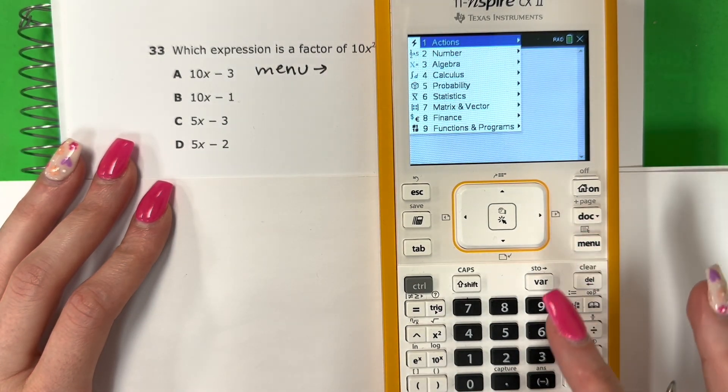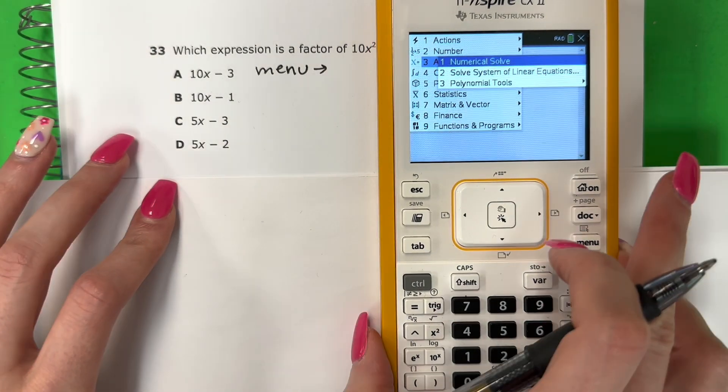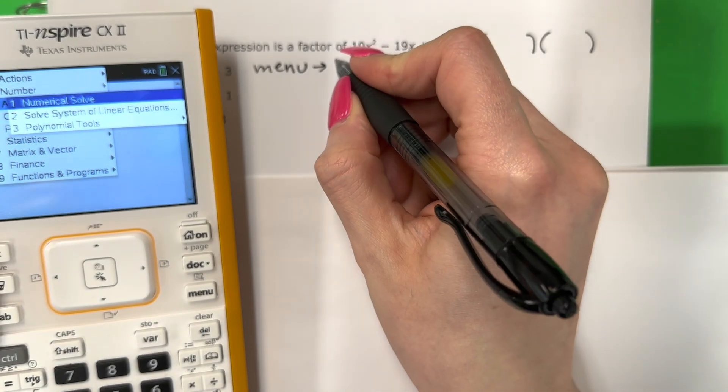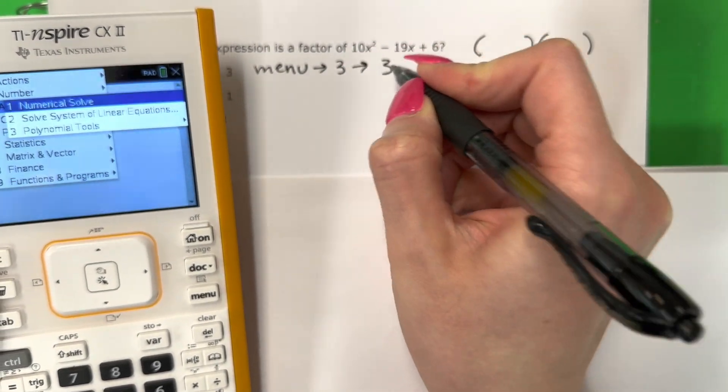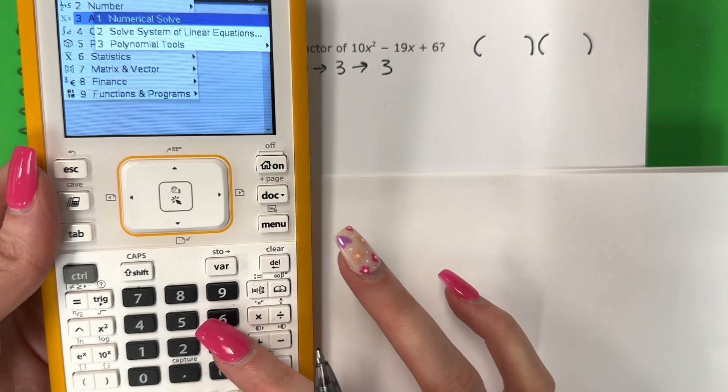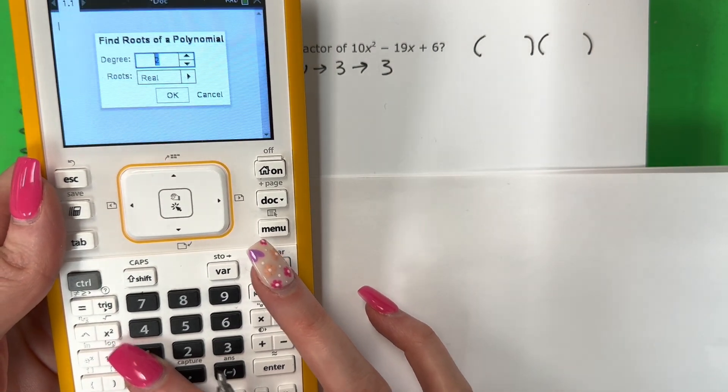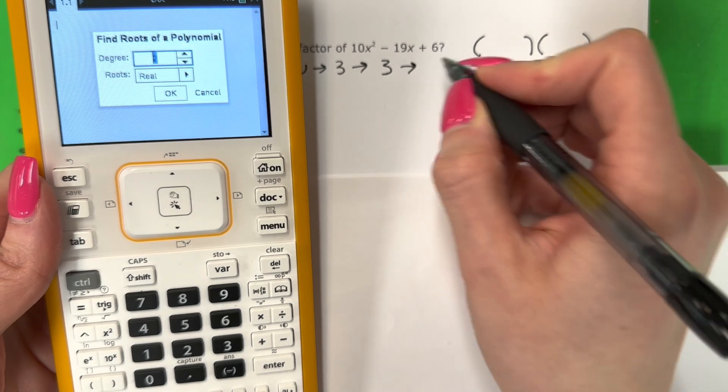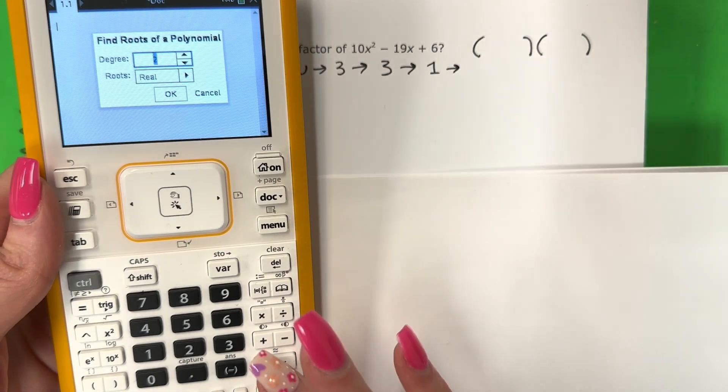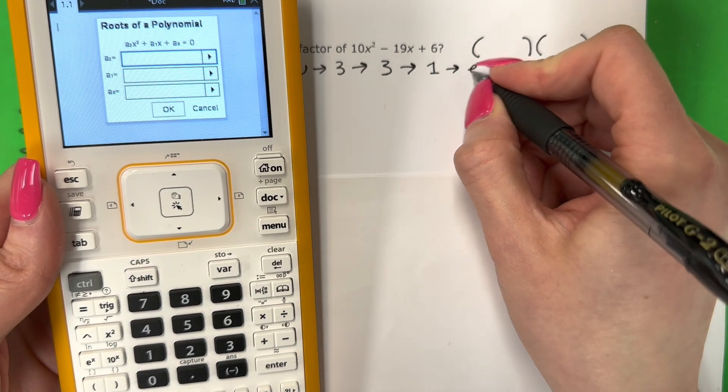You're going to push menu. And then you're going to push three. Tres. So menu three. Then again three. Otra vez tres. And then you're going to go ahead and push one. Y uno. And then you're going to push enter. Enter.